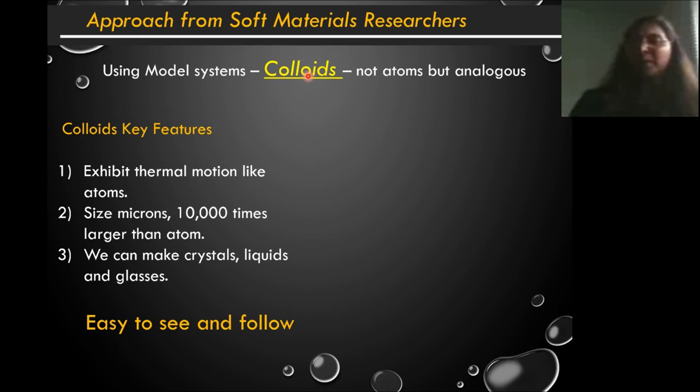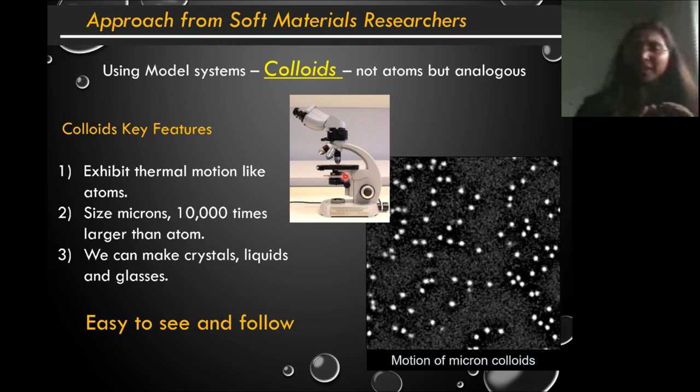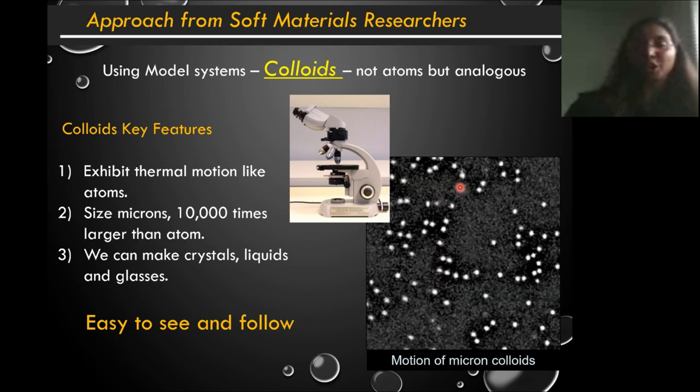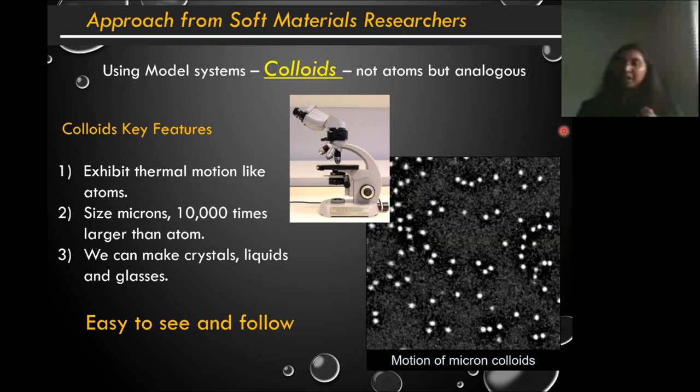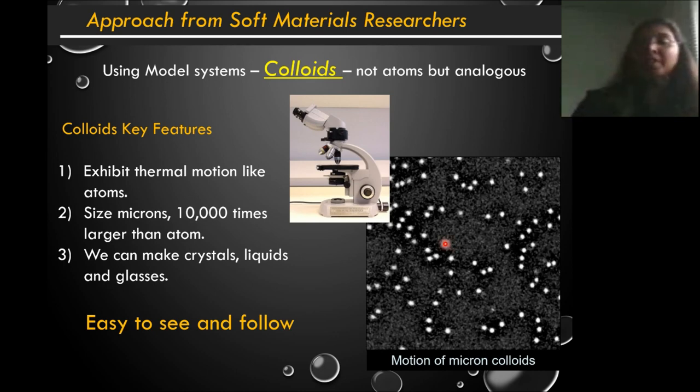So actually colloids are nothing new, we pretty much use them every day. For instance milk is a colloidal suspension, fat globules suspended in water, but we don't use milk for our studies. What we use is we tailor make the particles we need such that they are of the sizes we want and so on and so forth. So we use these colloids which let's call for the purposes of this talk big atoms. So we use these colloids which move around in liquid, in water like atoms, which are much larger than atoms and they can form crystals, liquid, glasses and so on, but the whole advantage is they are easy to see and easy to follow. So we can use simple microscopes like tabletop microscopes and image colloidal particles. For instance each of these bright spots you see around is a one micron colloidal particle which is jiggling around in water. So this is in some sense a liquid because you have few particles which are moving around in the liquid.